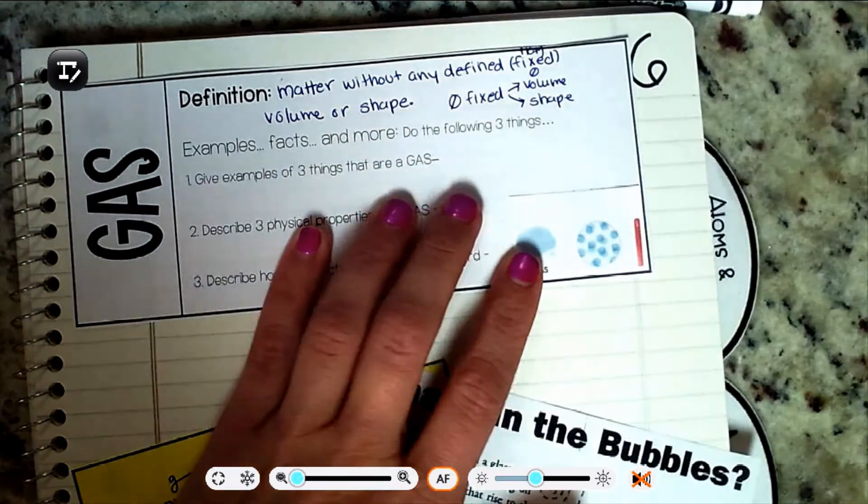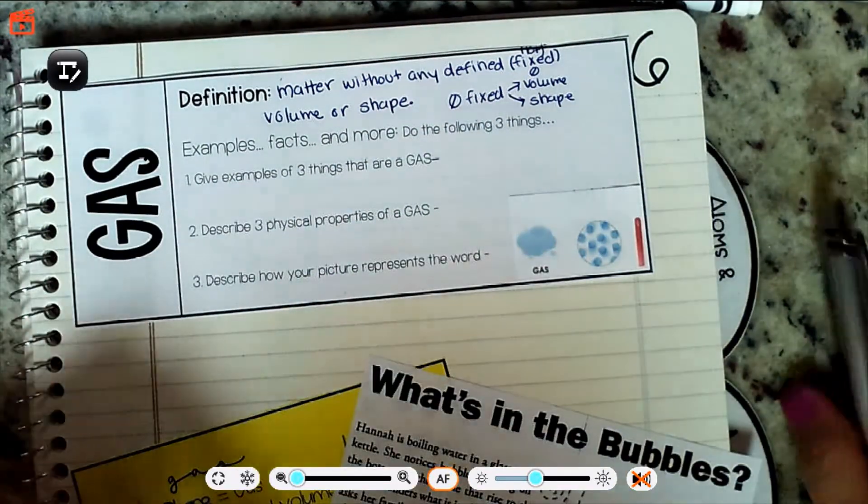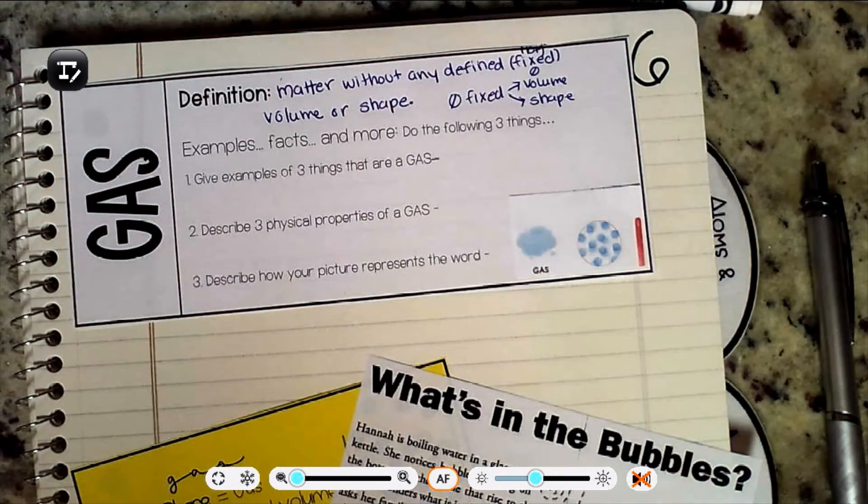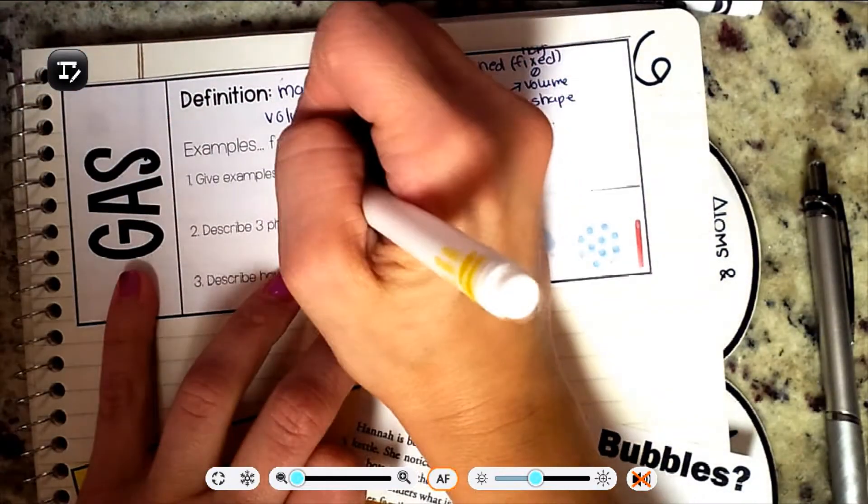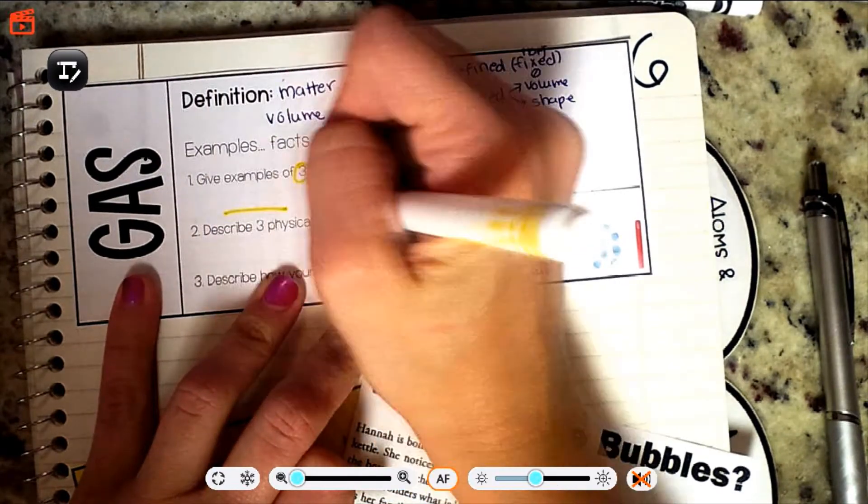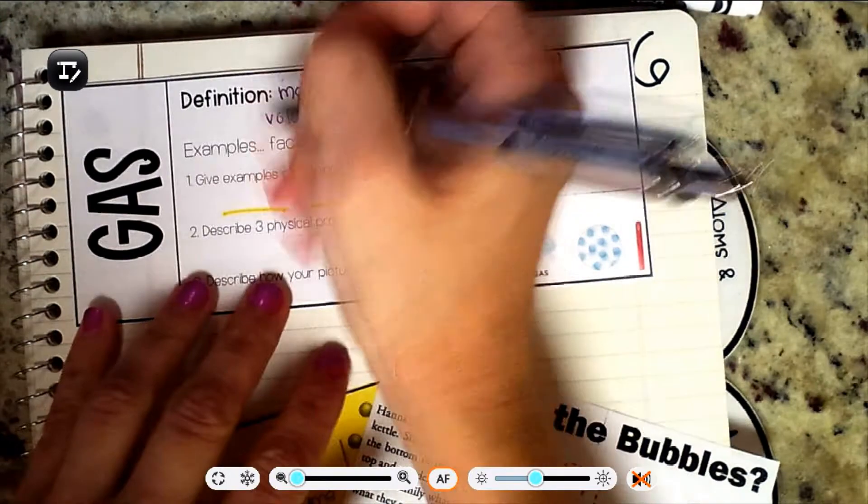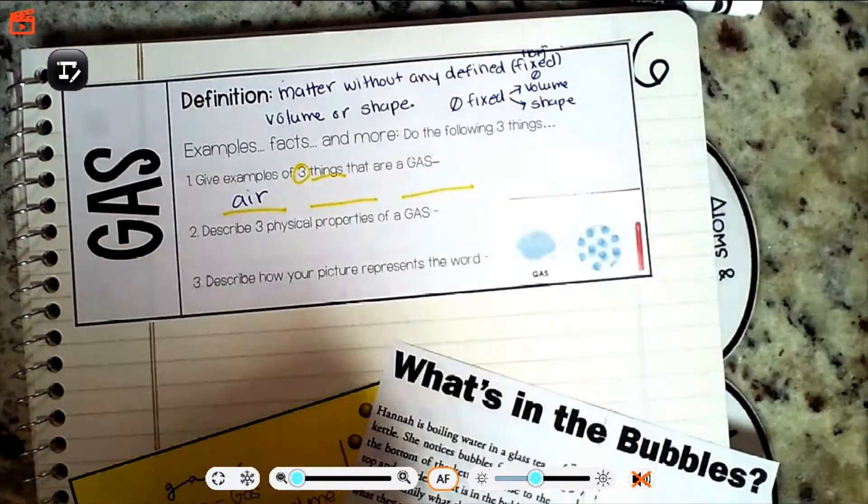Remember that volume is the amount of space that it takes up. So we are going to do gas today. Three things, one two three that are a gas. Yup, air. Took the easy one. Find three more.